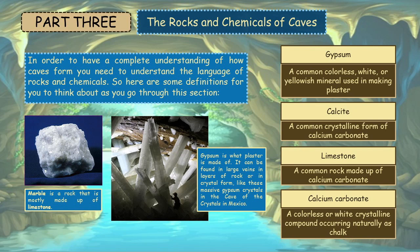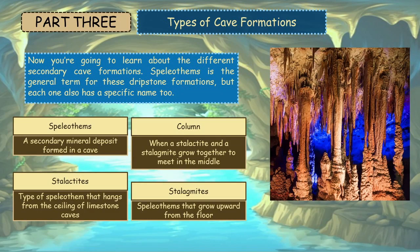Here are some definitions: Gypsum is a common, colorless, white or yellowish mineral used in making plaster. Calcite is a common crystalline form of calcium carbonate. Limestone is a common rock made up of calcium carbonate. Calcium carbonate is a colorless or white crystalline compound occurring naturally as chalk. Marble is a rock that is mostly made up of limestone. Gypsum is what plaster is made of, and it can be found in large veins and layers of rock or in crystal form, like these massive gypsum crystals in the Cave of the Crystals in Mexico.